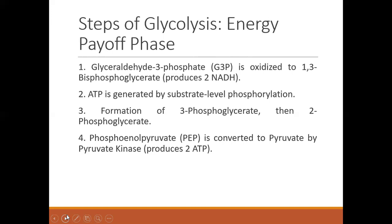The second phase of glycolysis is the energy payoff phase. The first step is the conversion of glyceraldehyde-3-phosphate through oxidation to bisphosphoglycerate. Because both glyceraldehyde-3-phosphate and dihydroxyacetone phosphate are interconvertible, the dihydroxyacetone phosphate is converted back to glyceraldehyde-3-phosphate, and two molecules of NADH are produced. ATP is also generated by substrate-level phosphorylation. Then there is the formation of 3-phosphoglycerate and then 2-phosphoglycerate. Phosphoenolpyruvate is converted to pyruvate by the action of pyruvate kinase, producing two molecules of ATP — also a substrate-level phosphorylation.